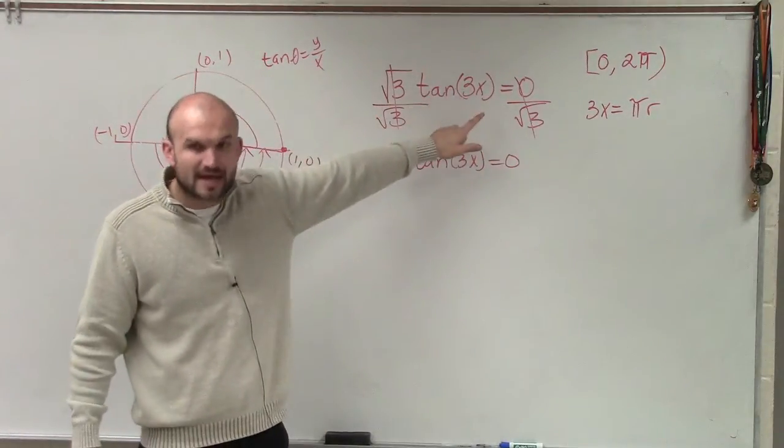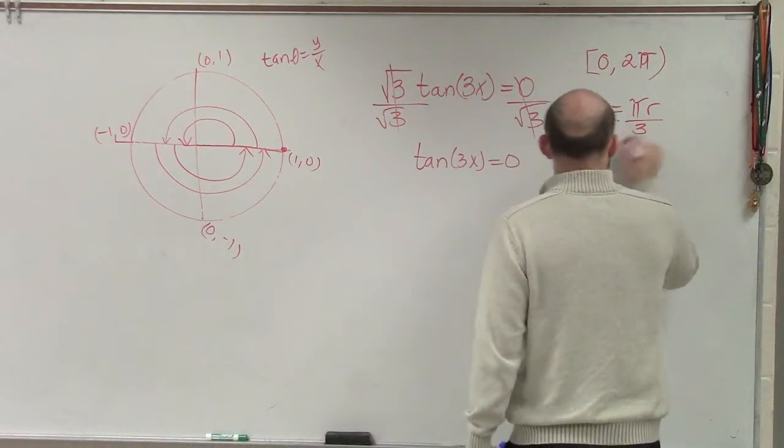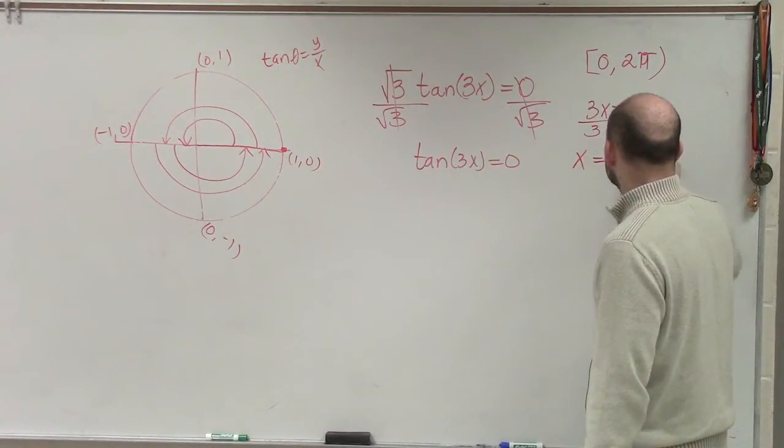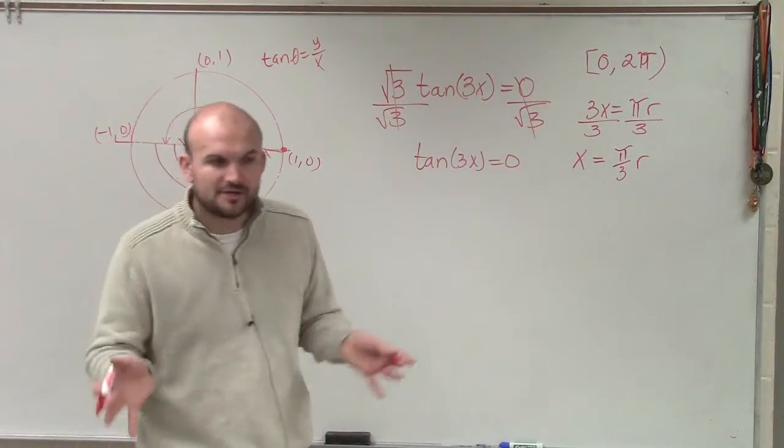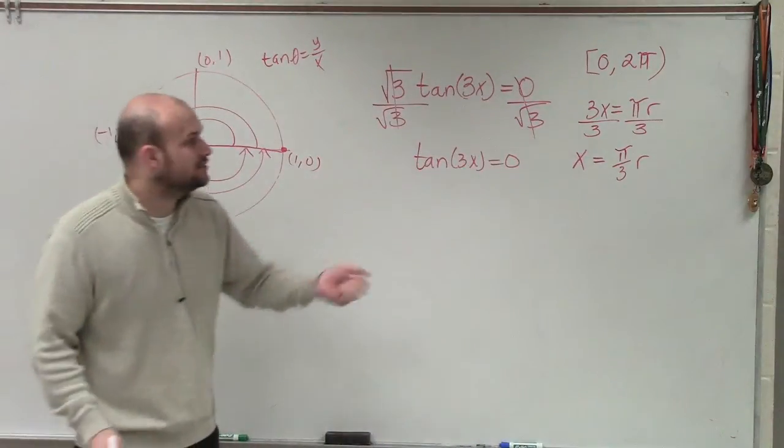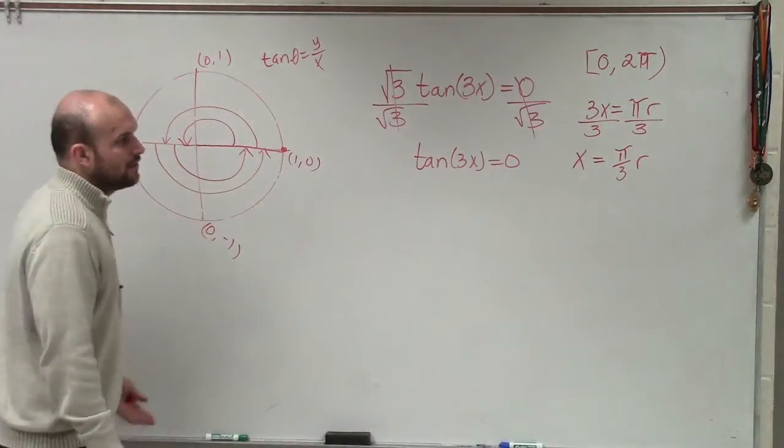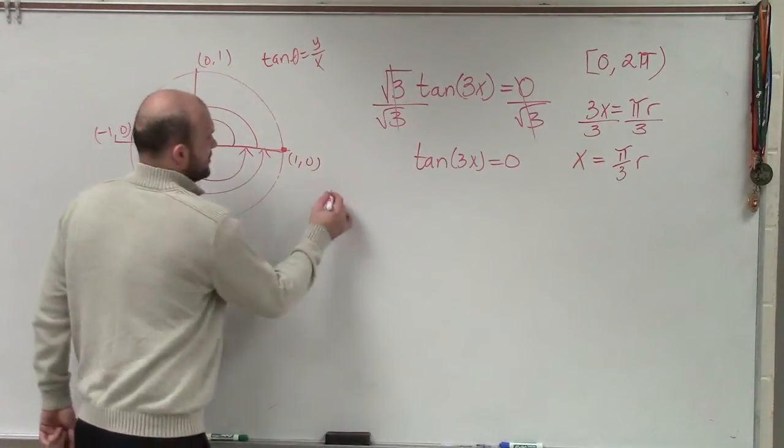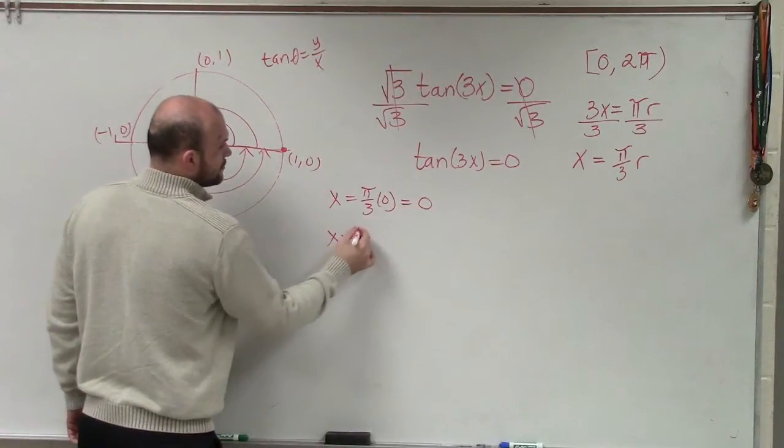So now I would divide by 3. So my answer for all solutions is π over 3 times r. That would be the answer for all solutions. But your question did not say find all the solutions. It said find only the solutions that are between 0 and 2π. Well, let's go back to what if r equals 0? If r equals 0, then we know it's equal 0. What about if r equals 1? Then another solution is π thirds. What about if r equals 2?